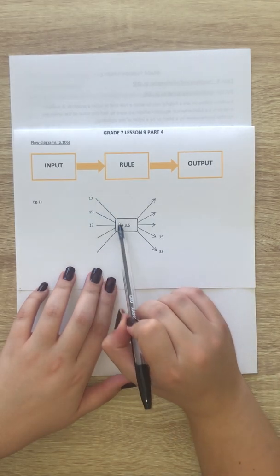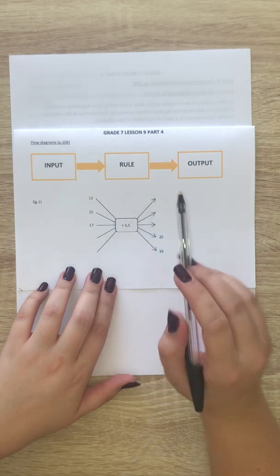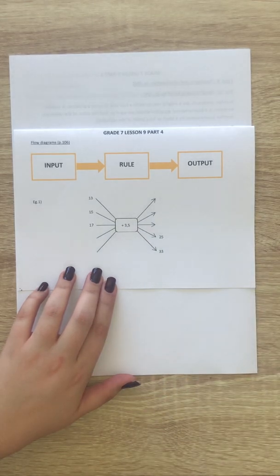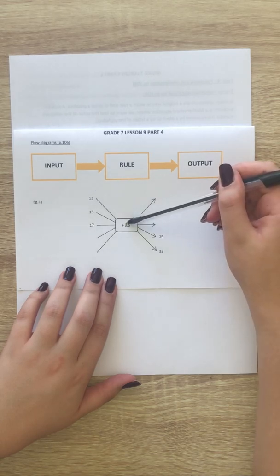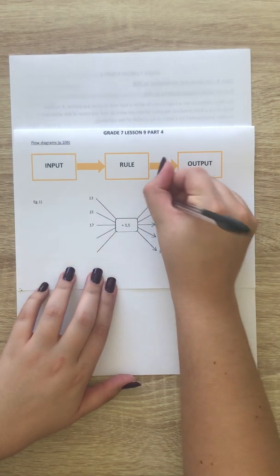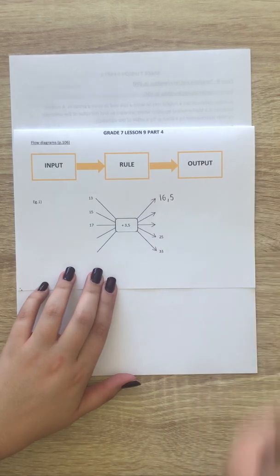13 plus 3.5. So you're just going to work it out on the side if you need to, or you can do it in your head. So 13 plus 3.5 is 16.5. So the first one is 16.5.